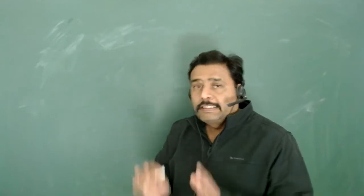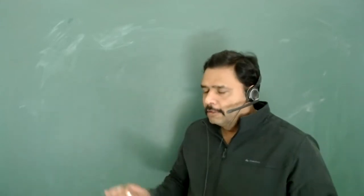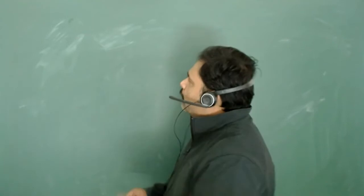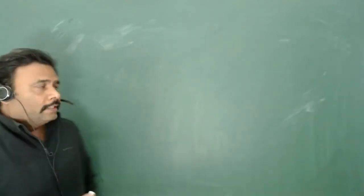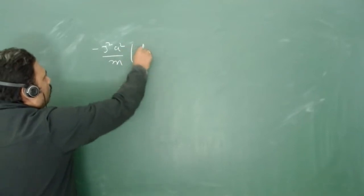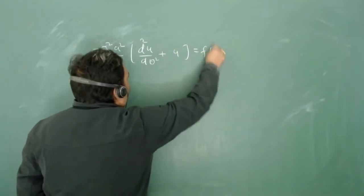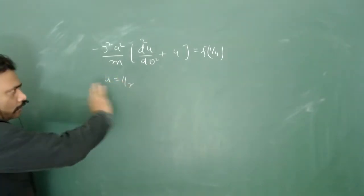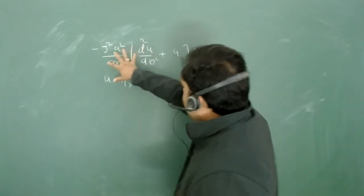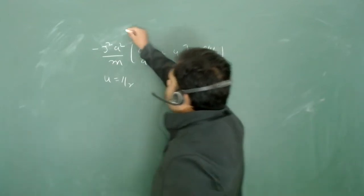Now we will go for the second part of Kepler's law and the central force problem. In the first part, we saw the properties of central force and the concept of V_effective. Now there is one more very important differential equation you should remember: minus j² u² upon m, times d²u/dθ² plus u, equals f(1/u), where u = 1/r. This is the differential equation of orbit.